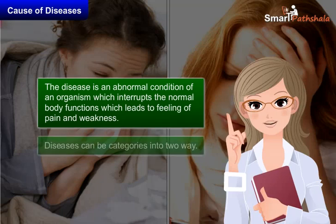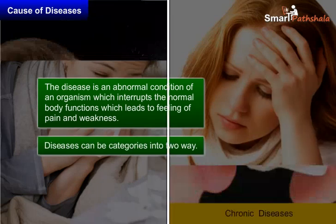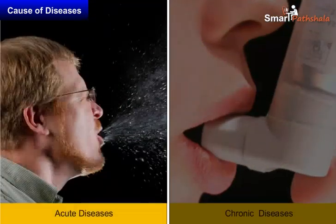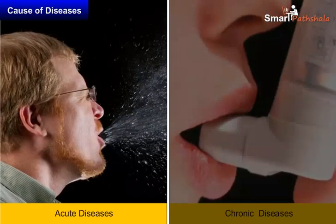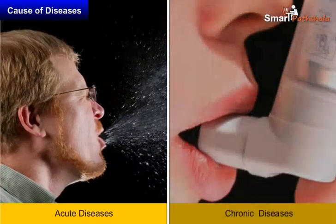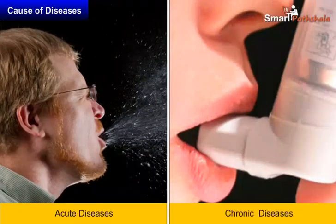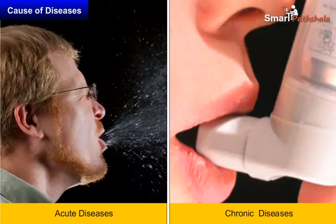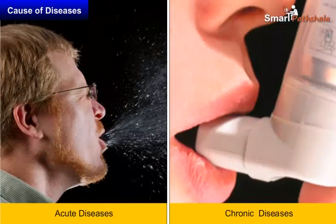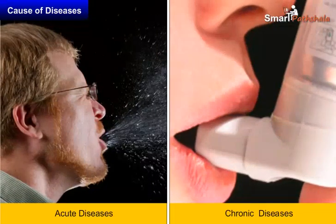Diseases can be categorized into two types. The first one is acute diseases and the second one is chronic diseases. Now, let's learn about acute and chronic diseases.